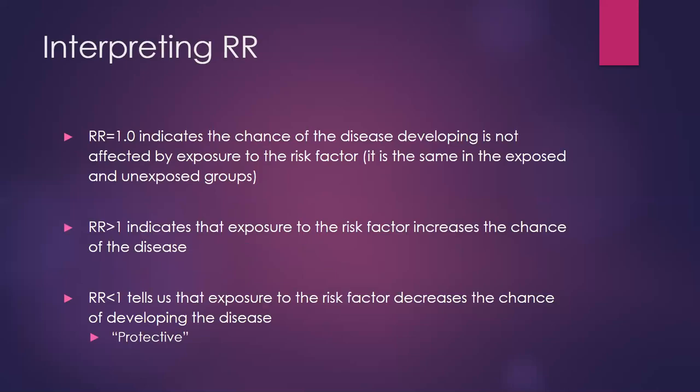We've covered risk ratios, relative risk, and odds ratios. As a reminder: since these are ratios, if the risk of an outcome is identical in both groups the relative risk equals one. A relative risk greater than one means the risk was higher for people who had the exposure compared to those who didn't. A relative risk less than one means the exposed group actually has a lower risk — we often call this a protective relative risk.